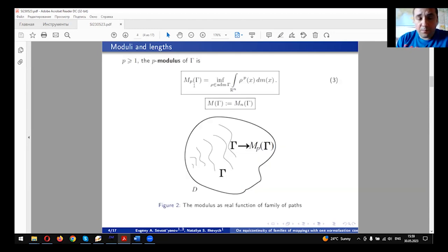If P equals to n, we omit as a rule the index n near the M in this notation. We see in the picture some family Γ. To this family Γ, we take into correspondence some number, some real number modulus M_P(Γ).